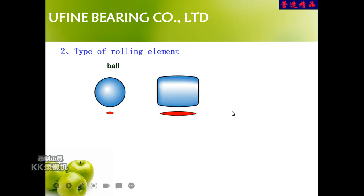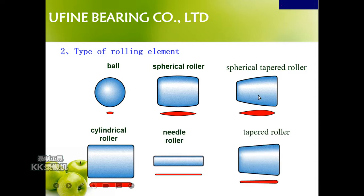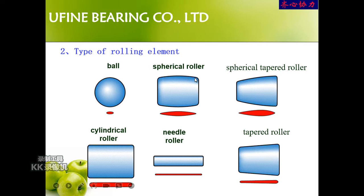Next, the type of rolling element — here I mean the balls and the rollers. Let's check out the six images. First is a ball — a very standard ball, widely used in different kinds of bearings. Next is a spherical roller. We can see from the image that the surface of this roller is not flat — it is spherical. So we call it a spherical roller.